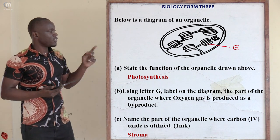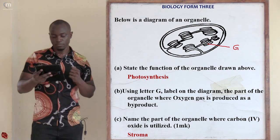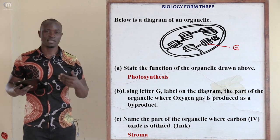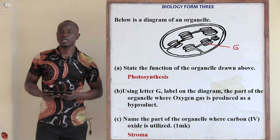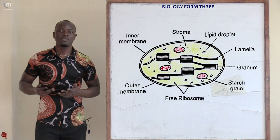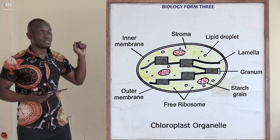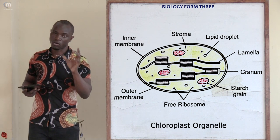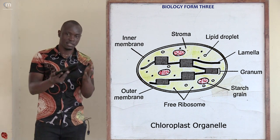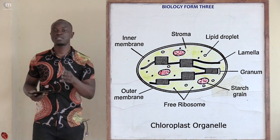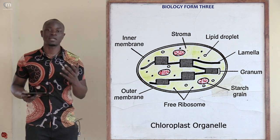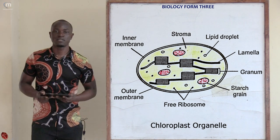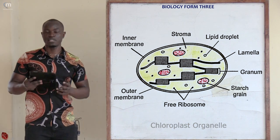Question number fourteen has a diagram of an organelle. Before going to the questions, let's analyze the organelle. We can see stacked parts which look like coins on top of each other, with lines joining the sets together. If you see a diagram resembling stacked coins, that automatically is a chloroplast. So this diagram is a chloroplast.